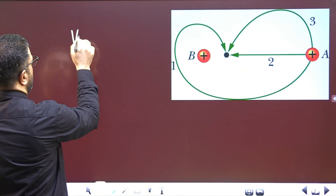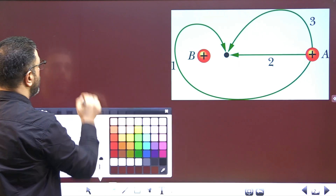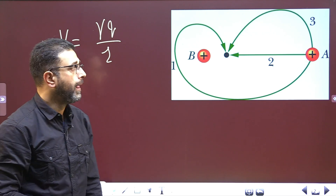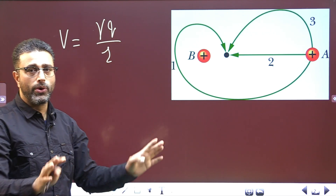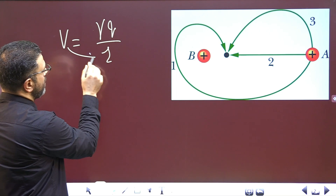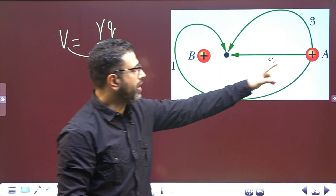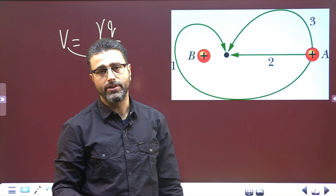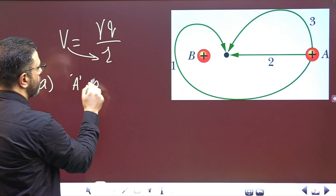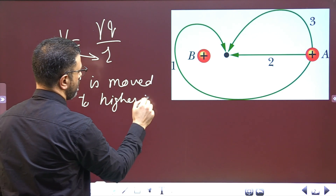The potential due to a point charge — and sphere B will behave like a point charge — is V = kQ/r, or gamma Q divided by r. Since the charge is positive, potential is positive, so no minus signs to worry about. We can see that potential is inversely proportional to distance. So if we are moving closer to B, then the potential will be greater.